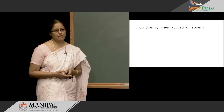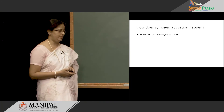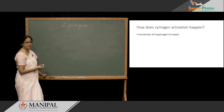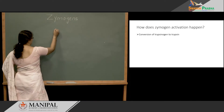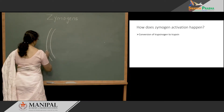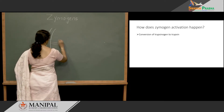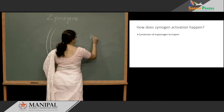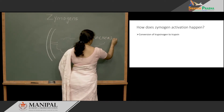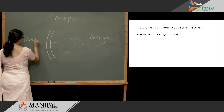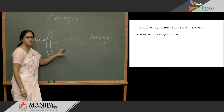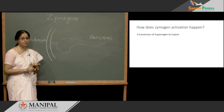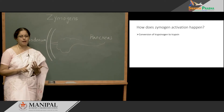Now let us see how Zymogen activation happens, taking conversion of trypsinogen to trypsin as an example. The organ that produces this Zymogen, trypsinogen, is the pancreas, where pancreatic zymogens are produced. These include trypsinogen, chymotrypsinogen, proelastase, carboxypeptidase A, and carboxypeptidase B.